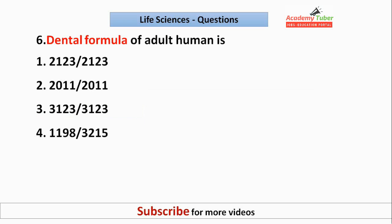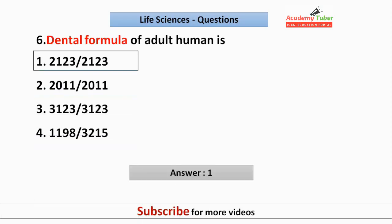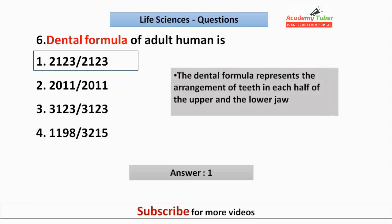The dental formula of an adult human is? The dental formula represents the arrangement of teeth in each half of the upper and lower jaw. Here the numerator is the upper jaw and the denominator is the lower jaw.